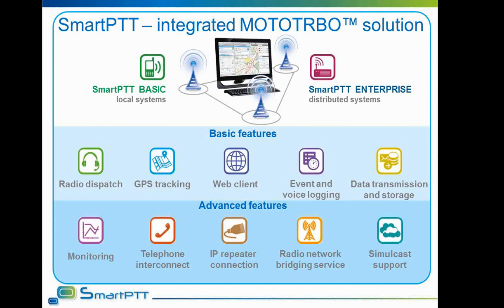Dispatcher software gives the opportunity to control and log the flow of data and voice in a radio network, request location of subscribers, and monitor the state of repeaters. SmartPTT connects to IP-Site Connect directly via IP. Capacity Plus and Linked Capacity Plus networks can be monitored and logged via IP connection, but to send data into the network, control stations are needed. SmartPTT also provides software tools such as a web client and file transfer software which increase radio network usability and functionality.